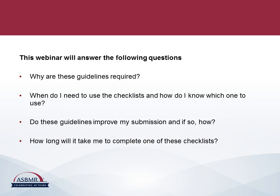Guidelines for different types of studies are increasingly used as a means of improving the reporting of research and also ensuring reproducibility and transparency. Many journals, of which JBMR is one, now require checklists for guidelines to be completed with the submitted article, where appropriate. The aim of this webinar is to outline the guidelines currently required by JBMR and to provide some advice about how they should be used and how they can improve the quality of submitted work.